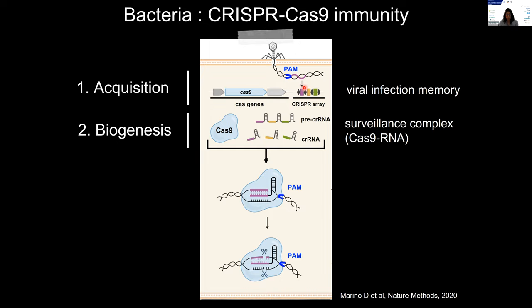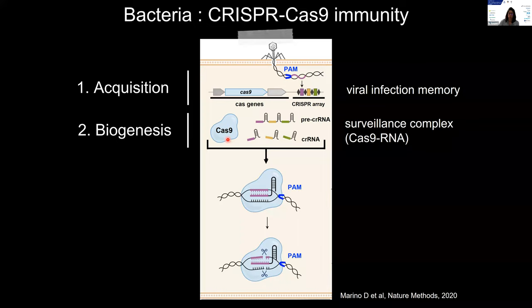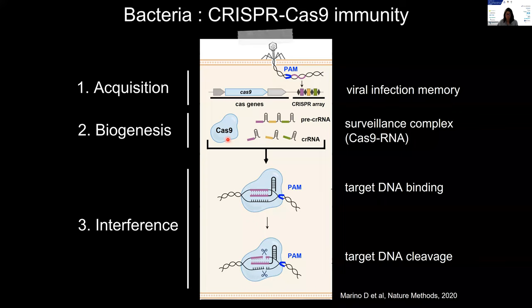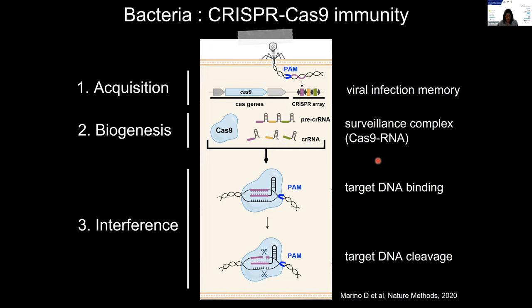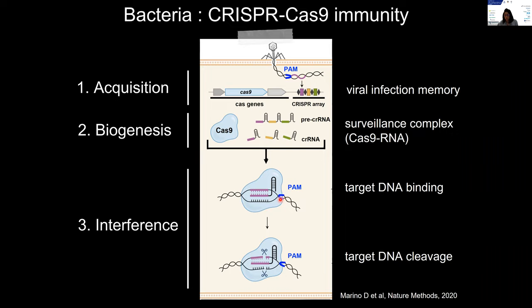This CRISPR array is then transcribed and processed into small CRISPR RNAs that associate with the Cas9 endonuclease to form ribonucleoprotein complexes called surveillance complexes, which patrol in the cell ready for interference. During interference, the surveillance complexes are in charge of target recognition and cleavage, which aborts the viral infection cycle. The target DNA, called the protospacer, has to be complementary to the CRISPR RNA sequence. Interference also requires the presence of a small DNA motif called the PAM — protospacer adjacent motif — that is recognized by Cas9 and allows self and non-self discrimination by the host.